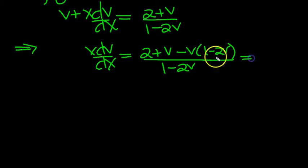We'll end up with minus v, which is what we get when we move that over. So here we've got 2, we've got v, take a v. So that's good, they cancel. And then we've got minus times a minus is plus 2v squared over 1 minus 2v.